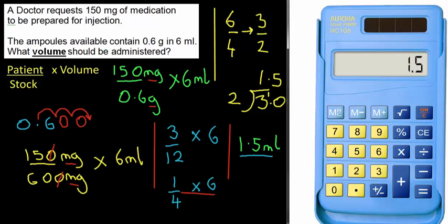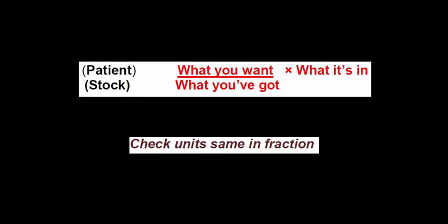That last question looks rather complicated, but it all starts with the formula. As long as you keep an eye on the units and convert if required, it is a series of very straightforward steps. Working by hand takes longer and requires good simplifying and division skills. With a calculator it's quicker, but make sure you don't use the calculator until the units in the fraction are the same. Always check the units — and thanks for listening.